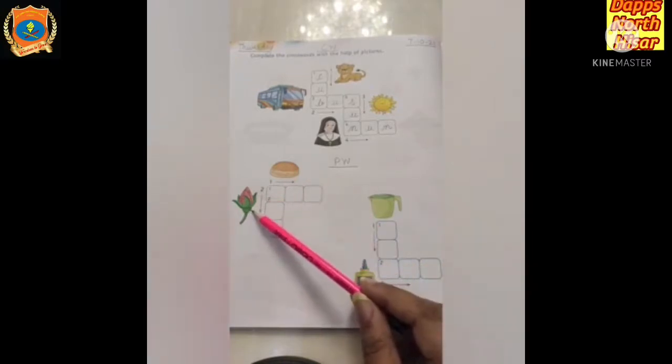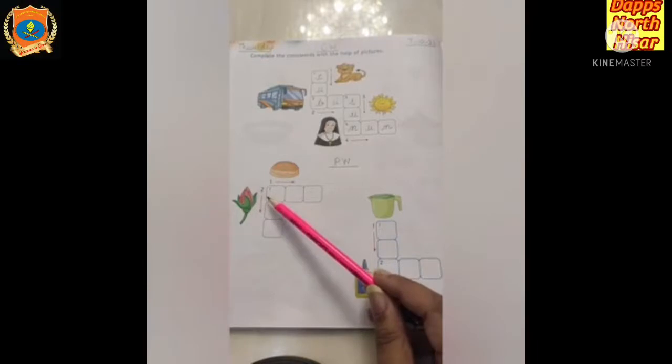What is this? The next picture is bud, the arrow is going downwards, so you will write this way, neiche wale direction mein.